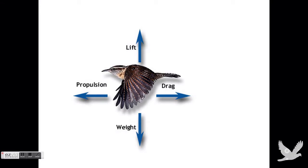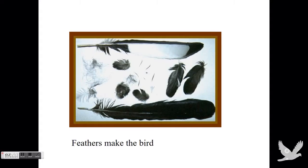A bird can move from four directions. Either it lifts from the air currents, or it puts on weight to fall down. It moves forward, or drags behind with varying propulsions.